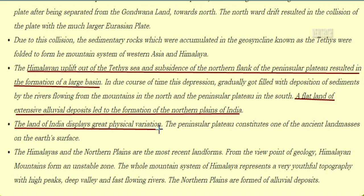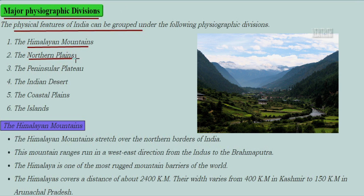The land of India displays great physical variation. The peninsular plateau constitutes one of the ancient landmasses of the earth's surface. The Himalayas and the northern plains are the most recent landforms geologically. The Himalayan mountain system represents a very youthful topography with high peaks, deep valleys, and fast-flowing rivers. The northern plains are formed of alluvial deposits. The major physiographic divisions of India are: Himalayan mountains, northern plains, peninsular plateau, Indian desert, coastal plains, and islands.